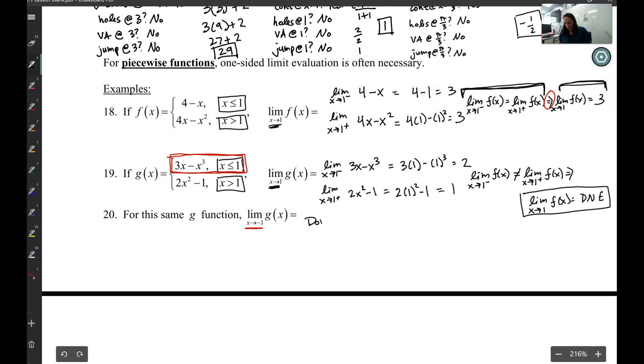For this one, I don't need one-sided limits because I don't have different equations from each side. Negative 1 just has one equation. So then I don't need to do it from both sides. I can just do limit as x goes to negative 1 of g(x).